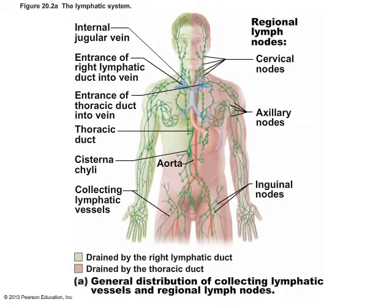This slide shows the distribution of lymph nodes throughout the body. They are especially concentrated in the inguinal region — the groin — the axillary region in the armpits, in the neck, and underneath the jaw. The function of lymph nodes is to filter lymph and surveil it for the presence of any type of pathogens.